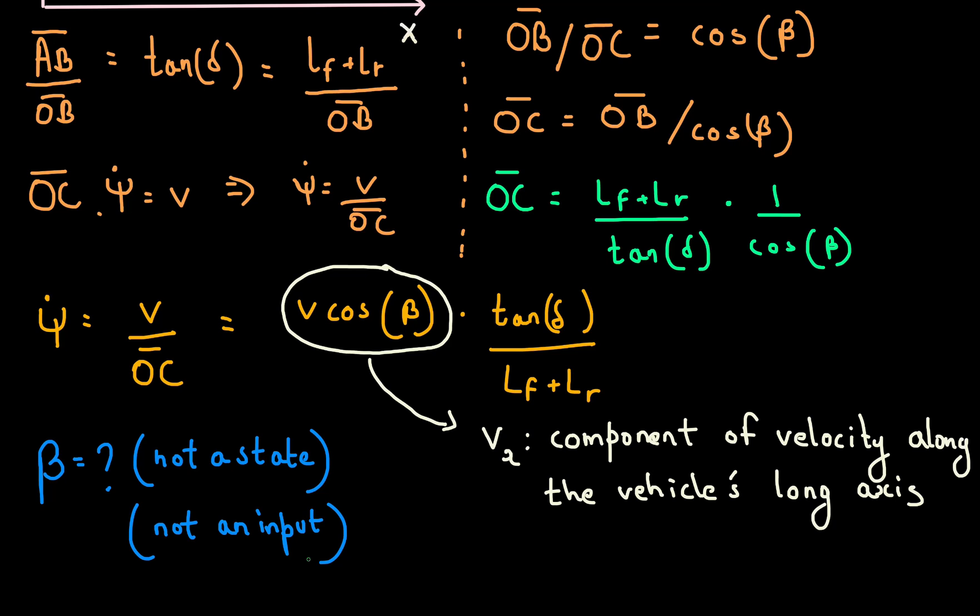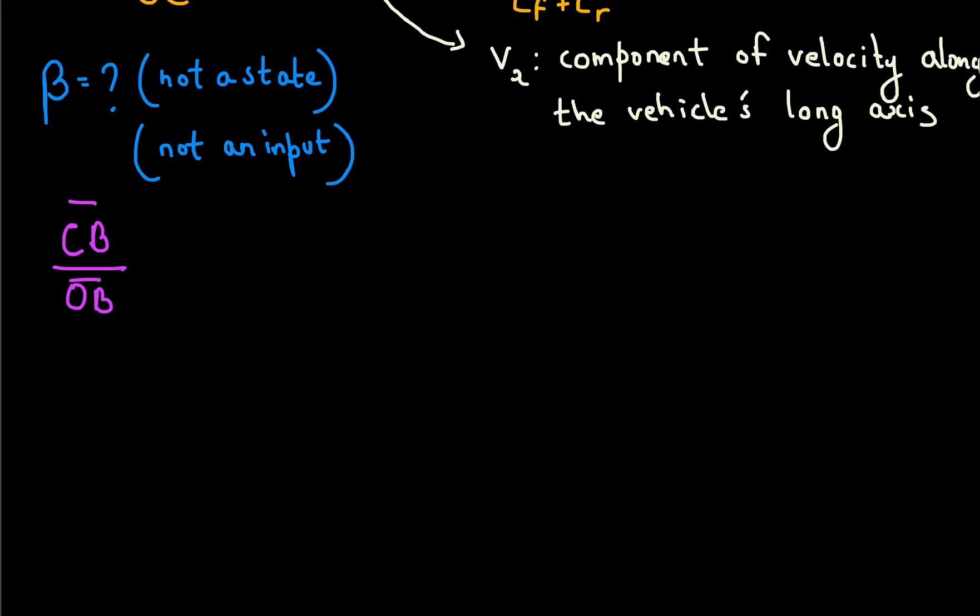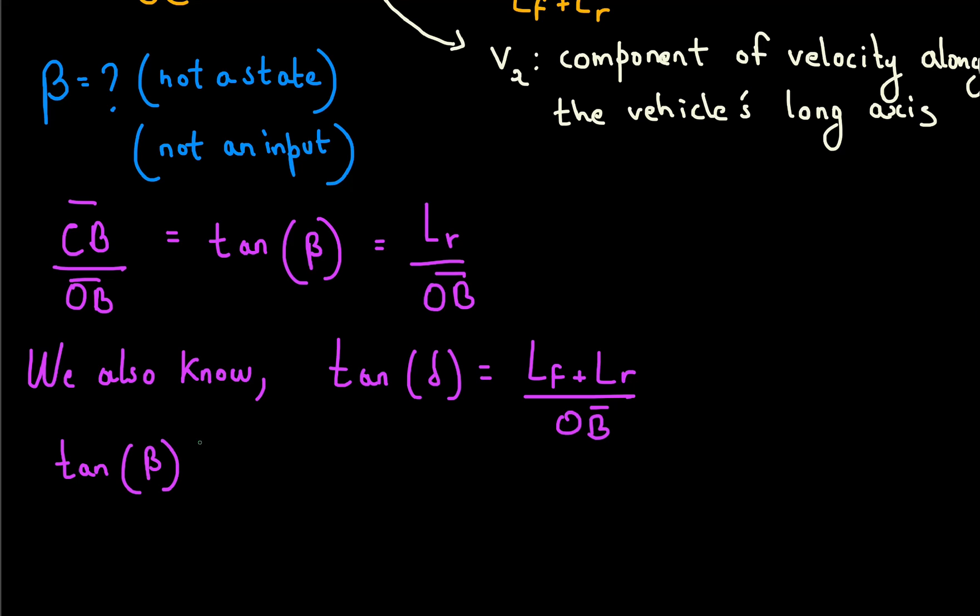In triangle OBC, CB by OB is tan of beta. So we have an expression for OB in terms of beta and LR. If you remember, we had another expression for OB expressed in terms of delta, LF and LR. Now if we put all of these together, we get another expression that allows us to express beta in terms of the input to the model, that is delta, and the parameters LF and LR. Finally, putting it all together, we get the equations we talked about in the last lecture.